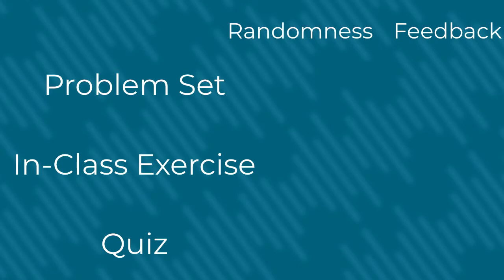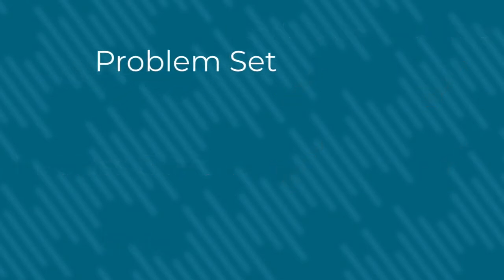A problem set has randomness turned on and feedback turned on, in-class exercises have feedback turned on and randomness sort of turned on, and quizzes have neither on. Let's look into it a little more in depth.